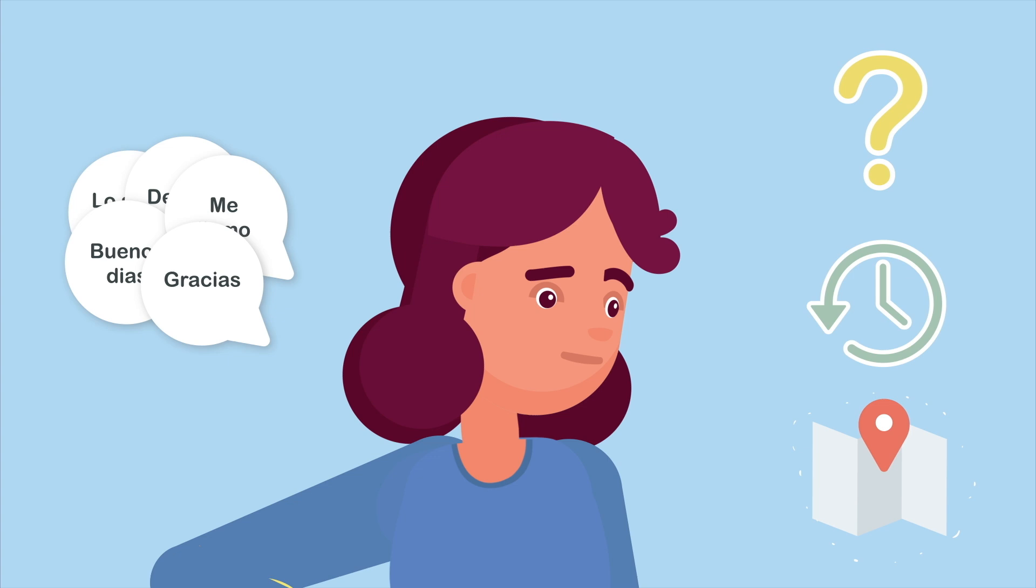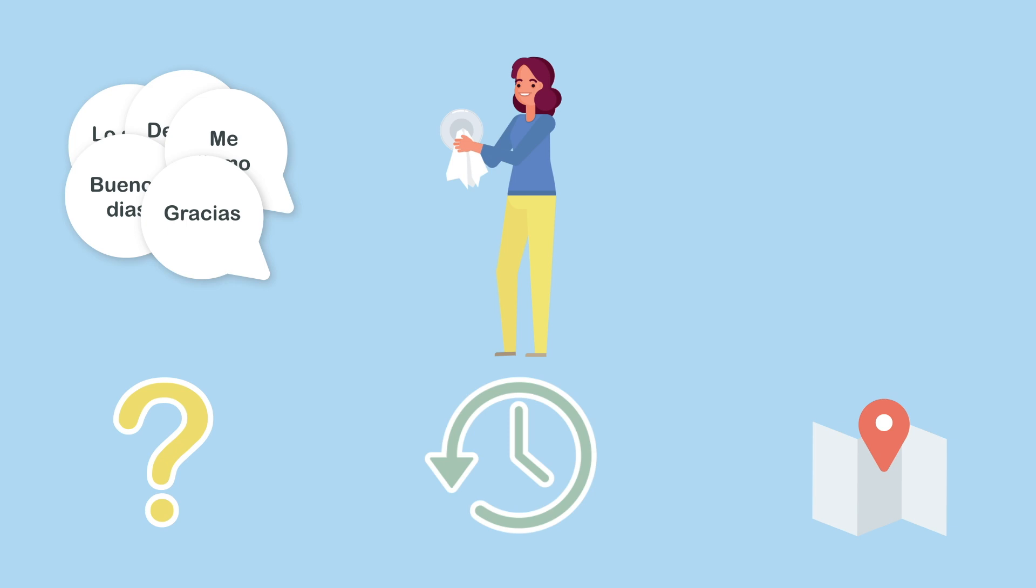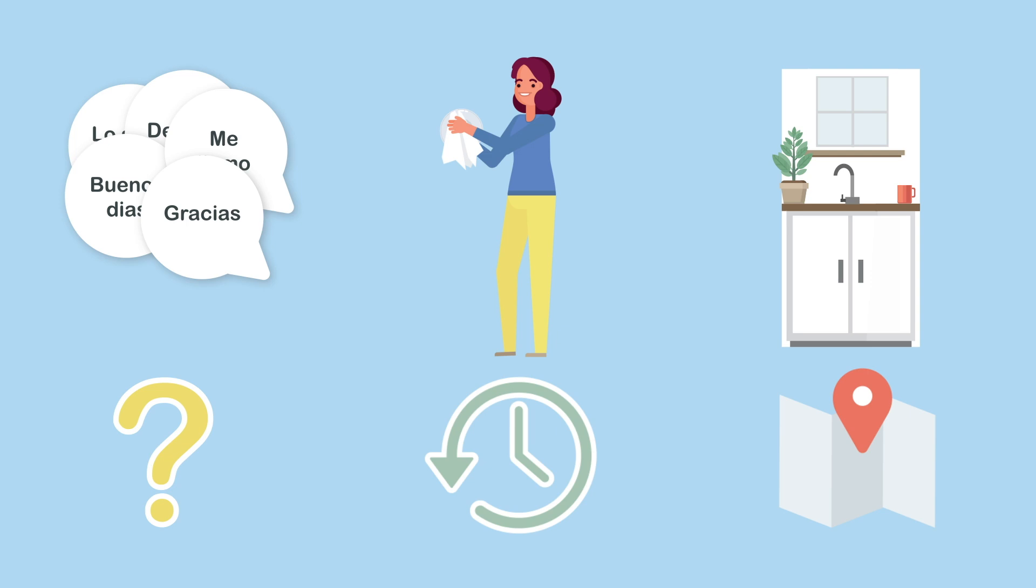Simplify the goal even further by answering three questions: What, when, and where? What, review five words a day. When, while doing the dinner dishes. Where, in the kitchen. Now you have a small and simple habit to work on. Review five Spanish words each day, while doing the dinner dishes, in the kitchen. This habit will help you move closer toward your goal of serving a senior mission.